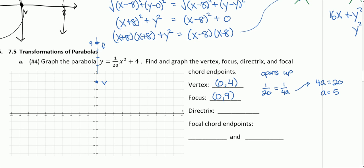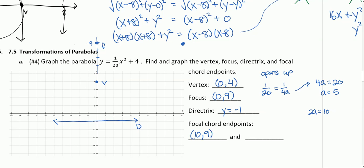Our directrix is going to be five below the vertex, which is at negative one. It's the equation Y equals negative one, since any horizontal line starts with Y equals. Lastly, we want our focal chord endpoints — they're lined up with the focus. To find how far from the focus they are, you take A and double it: two times A is ten. So the focal chord endpoints are at ten, nine and negative ten, nine. The focus is always inside the parabola; the directrix is always on the opposite side.